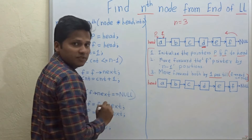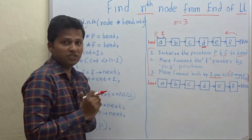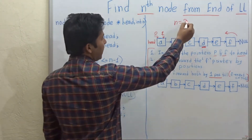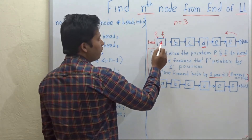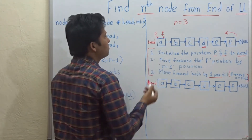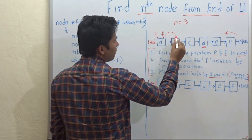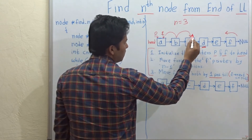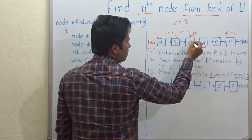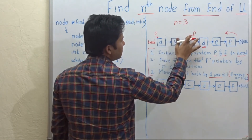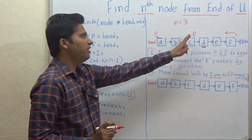The second step says to move forward the f pointer by n minus 1 positions. As n is 3 here, we have to move forward pointer f by 2 positions. So let's move forward f by 2 positions — 1 and 2. Now pointer f will point to node c.